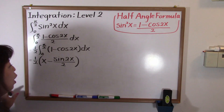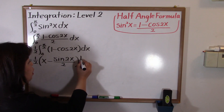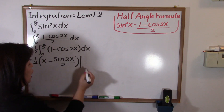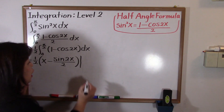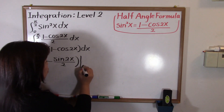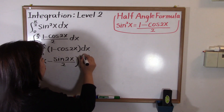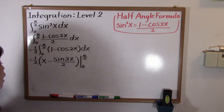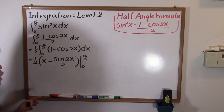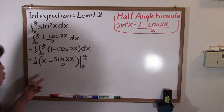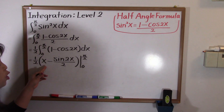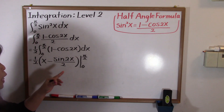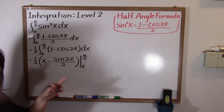Now we need to apply the boundary limits. I'll draw a straight line — the lower limit is zero and the upper limit is pi over two. We evaluate the expression x minus sine two x over two at these boundaries.